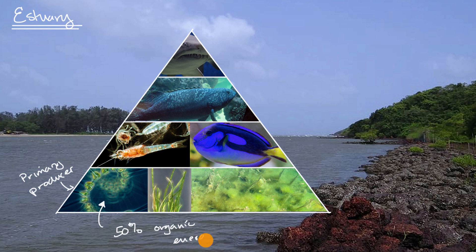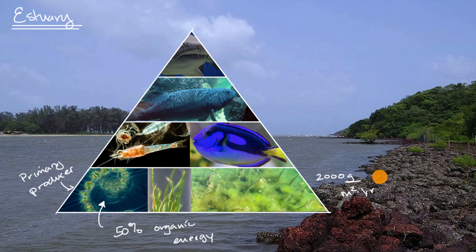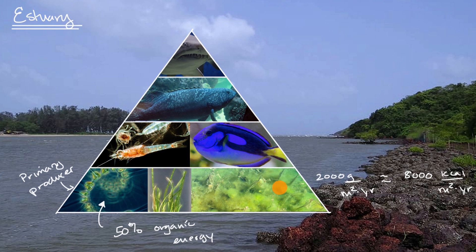So things like this — things you oftentimes don't see. Estuaries tend to be quite productive, actually comparable to rainforests. To make things tangible, let's imagine that the net primary production from this first layer is about 2,000 grams per square meter per year. We could also think about it in terms of calories — with roughly four kilocalories per gram, that would be approximately 8,000 kilocalories per square meter per year. That's the net primary production of the primary producers.